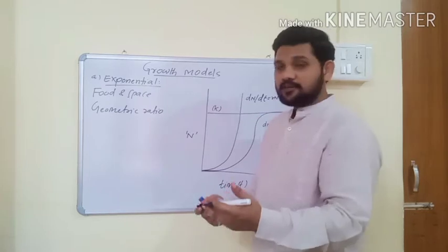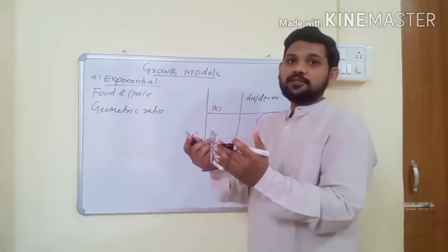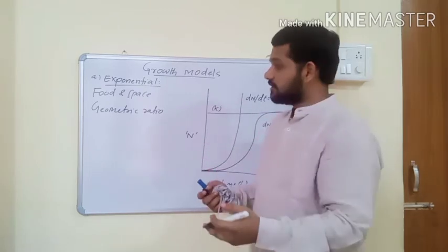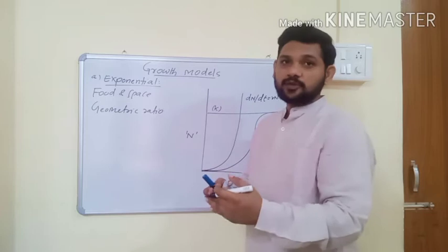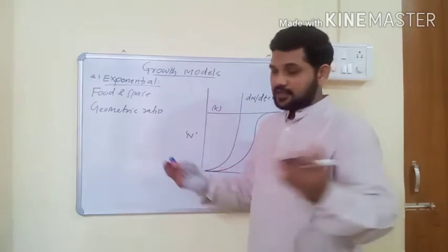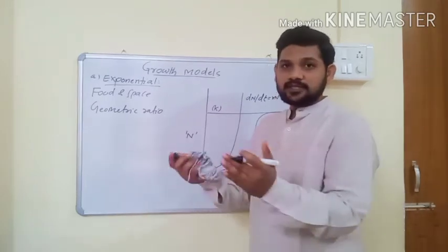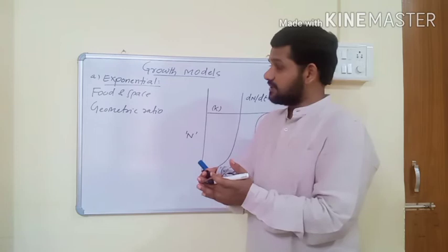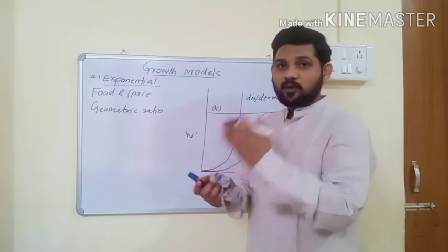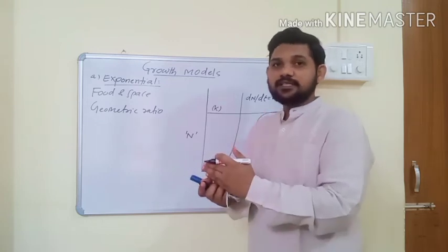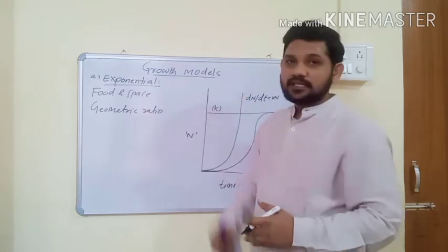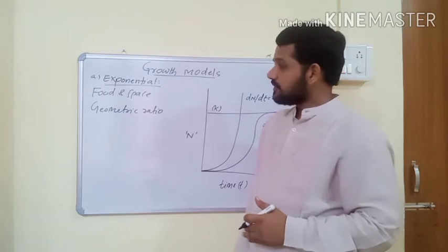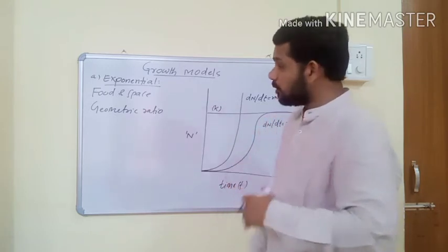When resources are unlimited, every species increases its reproductive potential and they continuously reproduce new offspring. When new offspring come together, that is population. This means population increases exponentially or in geometric ratio.